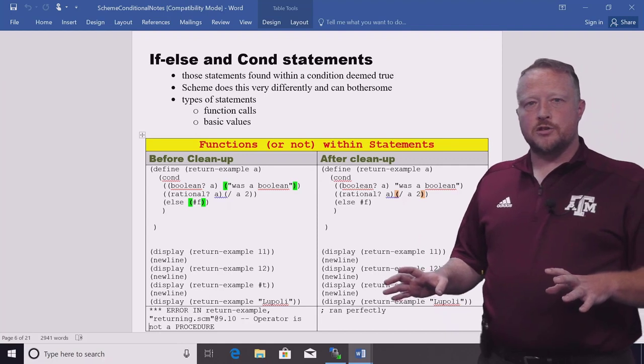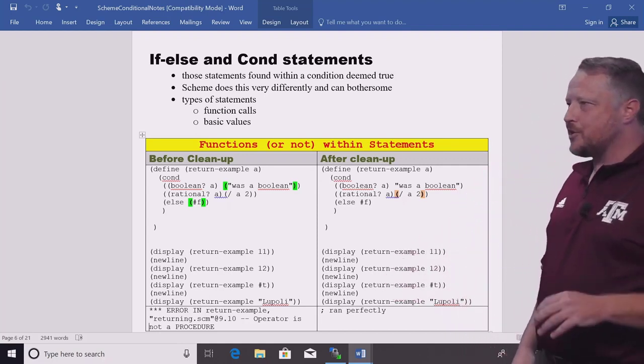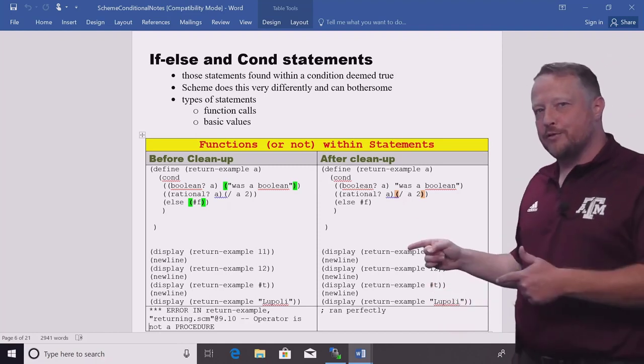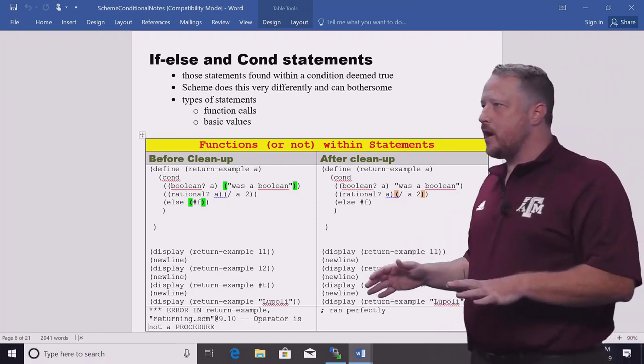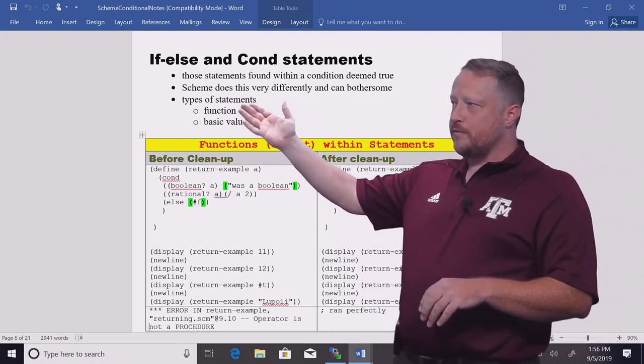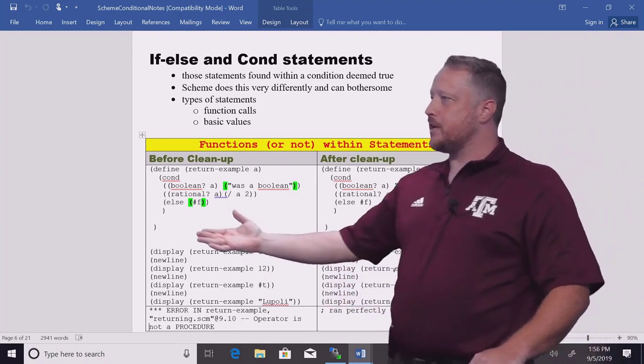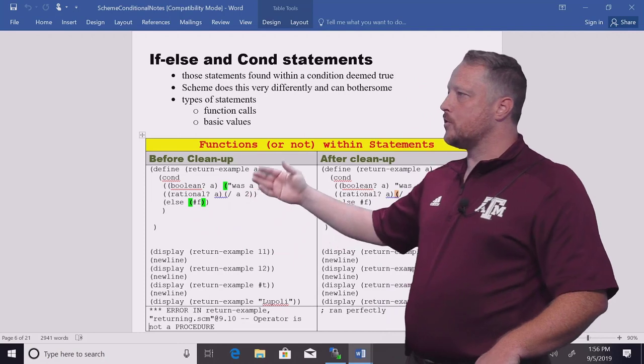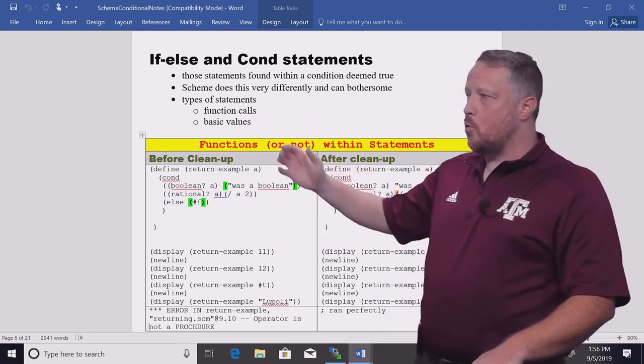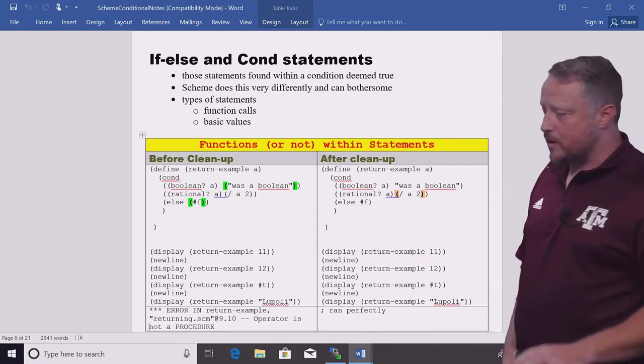If-else conditions are pretty easy to figure out from your previous experience. But it's actually the statements after it that can really trip us up. So we have to be very careful that there's two different, there's actually more, but there's at least two types of statements that we're going to have after the condition like we have right here with Boolean-a, rational, and else. It's either going to be a function call or some type of basic value that we may want to return back from the function.